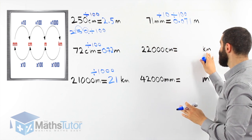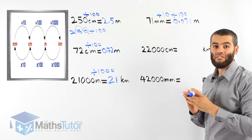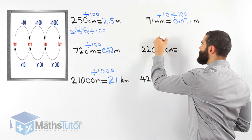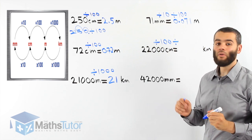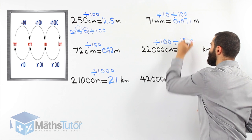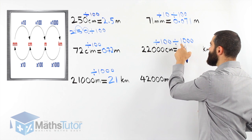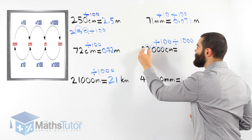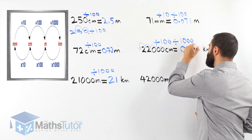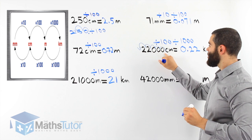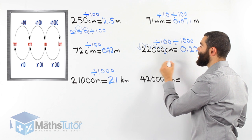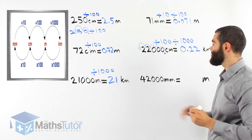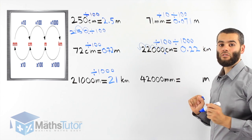22,000 centimetres — how many kilometres? We're going from centimetres to metres and then to kilometres. Divide by 100 to go from centimetres to metres, then divide by 1,000 to go from metres to kilometres. 22,000 divided by 100, then divided by 1,000 means we move the decimal point left five places. 22,000 point — bring the point left five times — gives 0.22 kilometres. So 22,000 centimetres equals 0.22 kilometres.